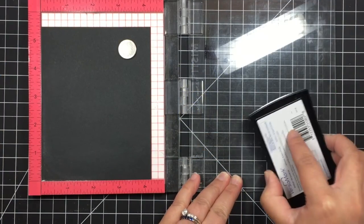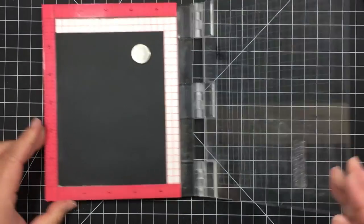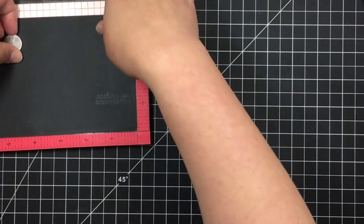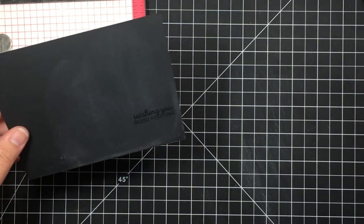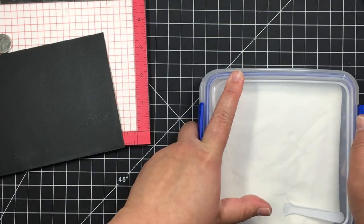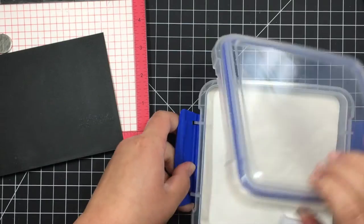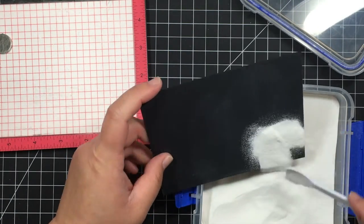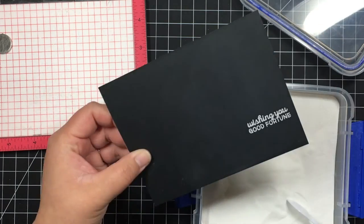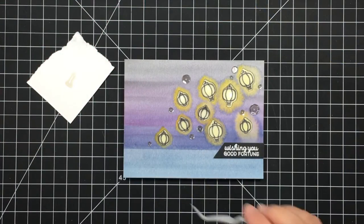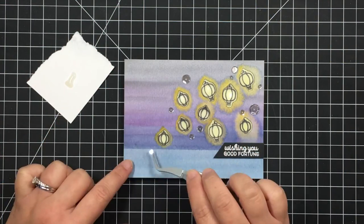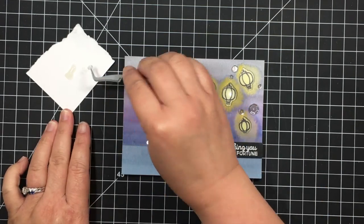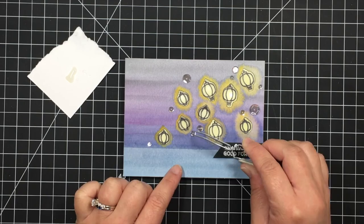I stamp my sentiment on a piece of black cardstock and heat emboss it with superfine white embossing powder. I trim the sentiment down to a flag and adhere it over that tiny distress ink mistake. Finally I add a sprinkling of sparkling clear sequins with glossy accents.